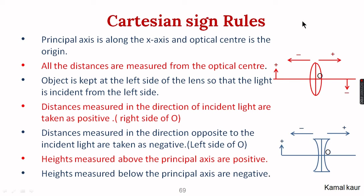The object will always be placed on the left side of the lens, which means that incident rays will start from the left side and move towards the right side. Any distance measured against the direction of the incident rays will be negative, and those measured in the direction of the incident rays will be positive. So any distance towards the left of the optical center will be negative, and towards the right will be positive. Heights above the principal axis are positive, and below the principal axis are negative.